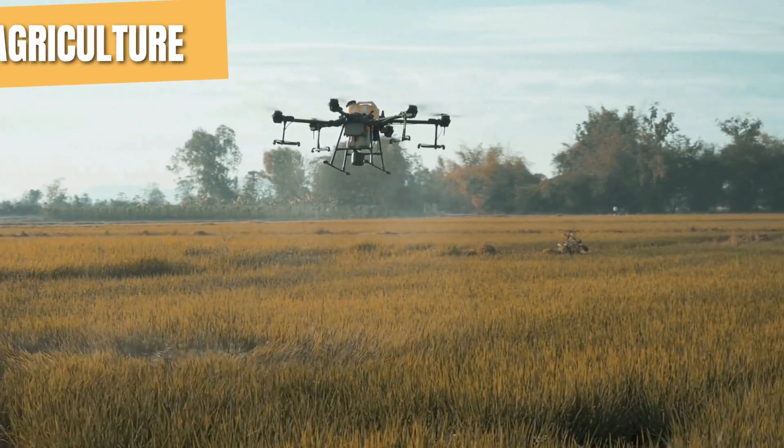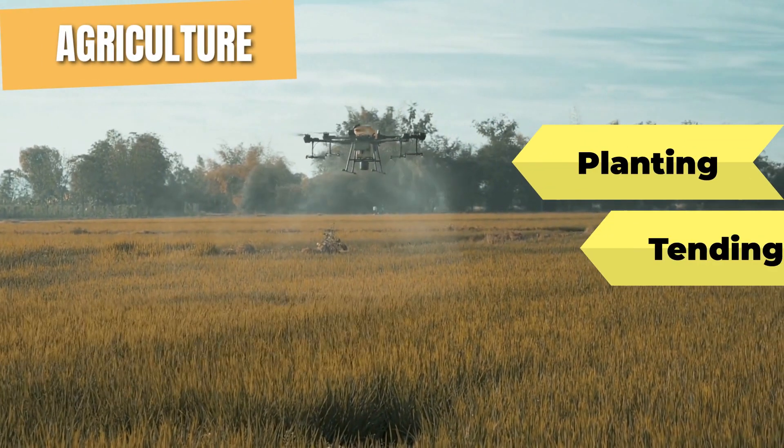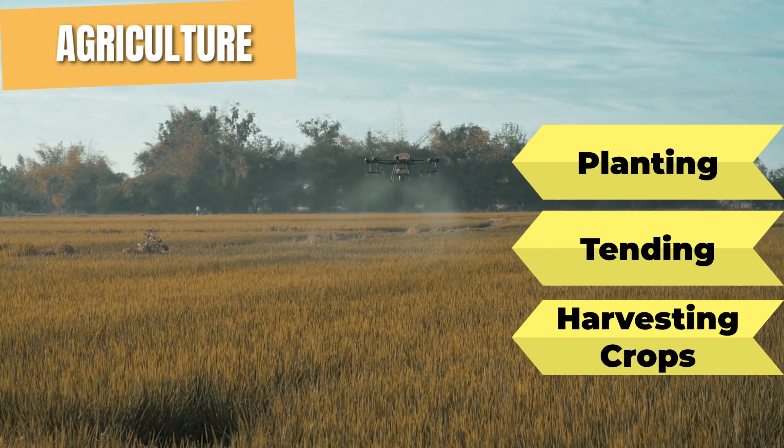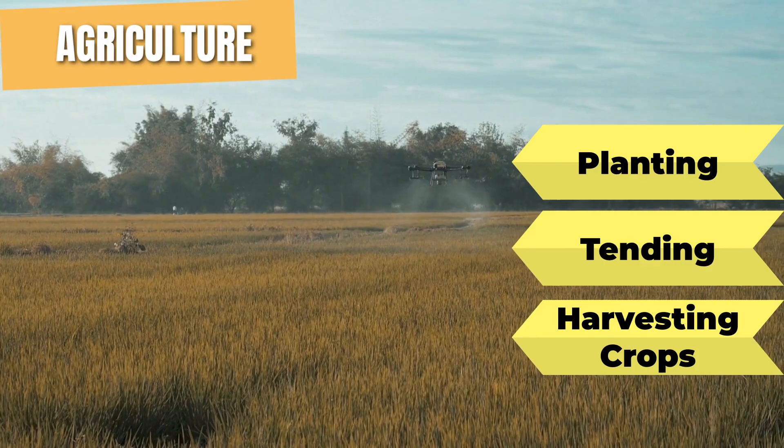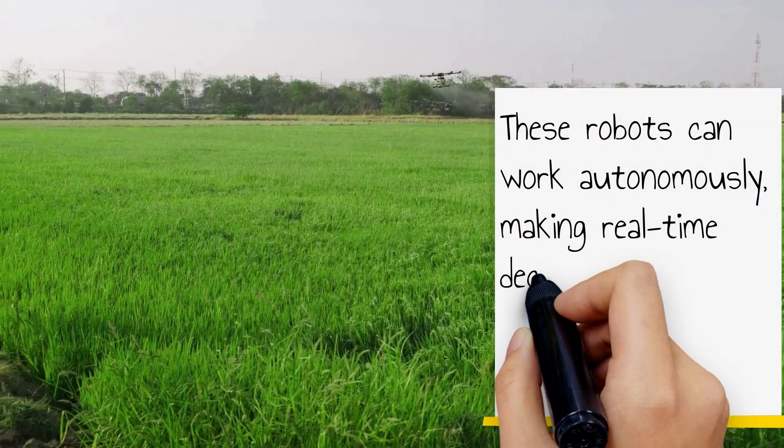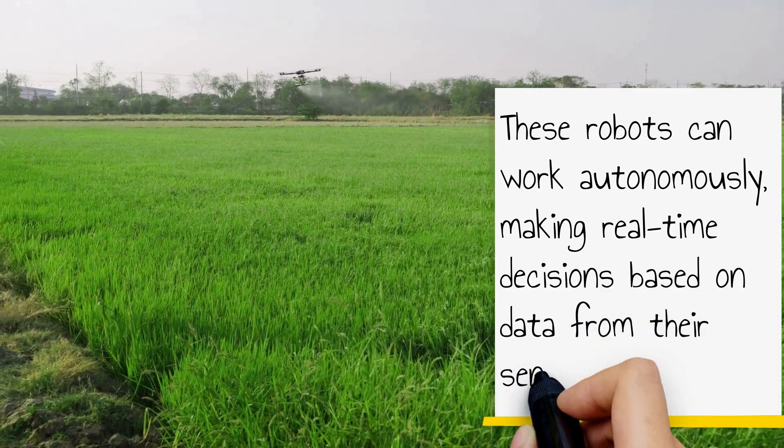Swarm robotics has various potential applications. In agriculture, they can revolutionize planting, tending, and harvesting crops, working tirelessly to increase efficiency and yield. These robots can work autonomously, making real-time decisions based on data from their sensors.